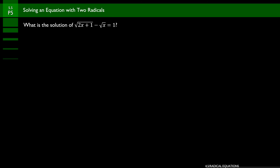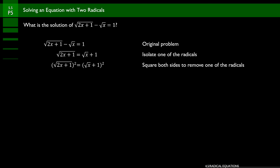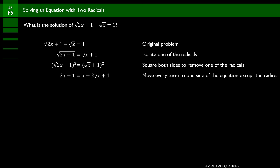Problem 5 has two radicals in one equation. When you see this, get one radical to the other side so the other is isolated. We keep the square root of 2x plus 1 isolated and move the negative square root of x to the other side with the 1. That gives square root of 2x plus 1 equals square root of x plus 1. Squaring both sides cancels those square roots, leaving 2x plus 1 equals x plus 2 times the square root of x plus 1. Now subtract x and subtract 1 to isolate the remaining radical, giving x equals 2 times the square root of x.